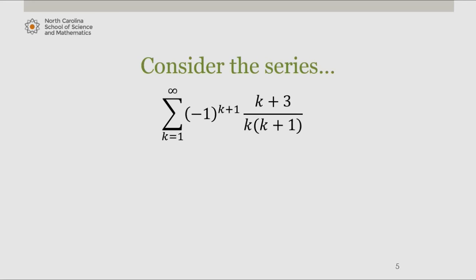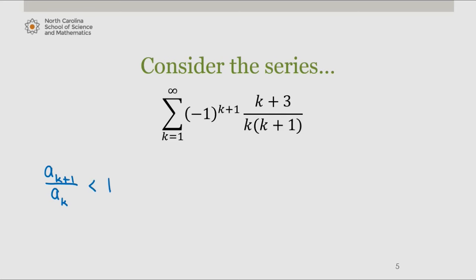Now consider the series from k equals 1 to infinity of negative 1 to the k plus 1 times the quantity k plus 3 divided by k times k plus 1. In order to test whether the first condition is satisfied, we're going to take a slightly different approach than in the previous example. If we can show that the ratio of terms a sub k plus 1 over a sub k is less than 1, this tells us that a sub k plus 1 is less than a sub k.